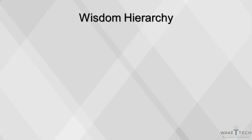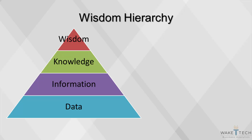A common method of understanding the relationship between data, information, knowledge, and wisdom is by using a pyramid. This graphic is called the DIKW pyramid, or the wisdom hierarchy, and it illustrates that data is the foundation upon which decisions can be made. Information is defined in terms of data, knowledge is defined in terms of information, and wisdom is defined in terms of knowledge. Data are numbers or text without any context.